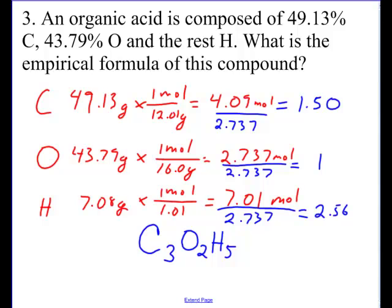All right, notice the ratio 1.5 right here to 1 to 2.56. Now if you have a 0.5 and a 0.5, the way to get rid of that is to times everything by 2, and so 1.5 times 2 is 3. That's why we have over here C3. 2.56 times 2 is 5, so there's our empirical formula.